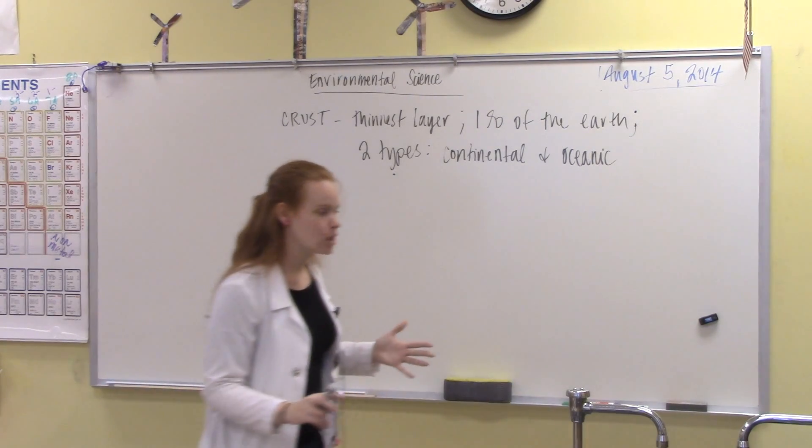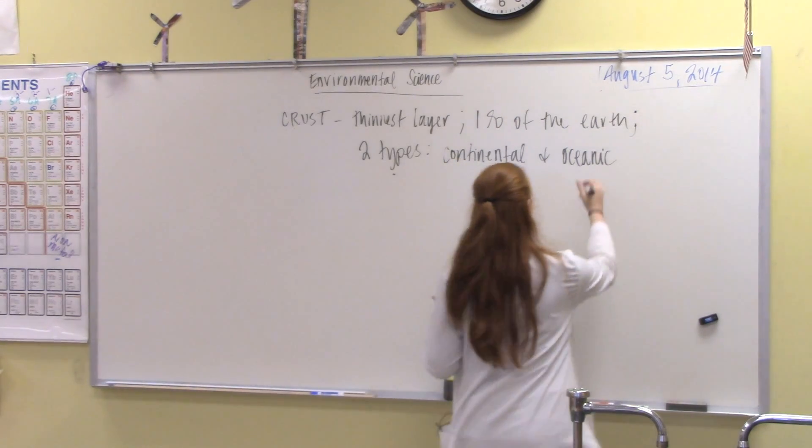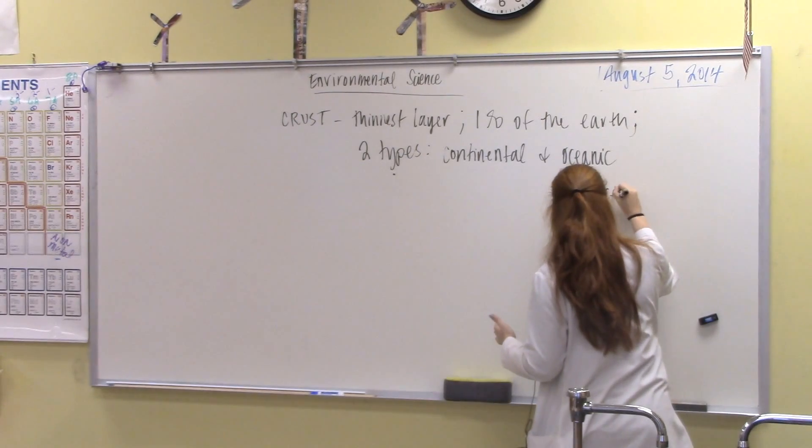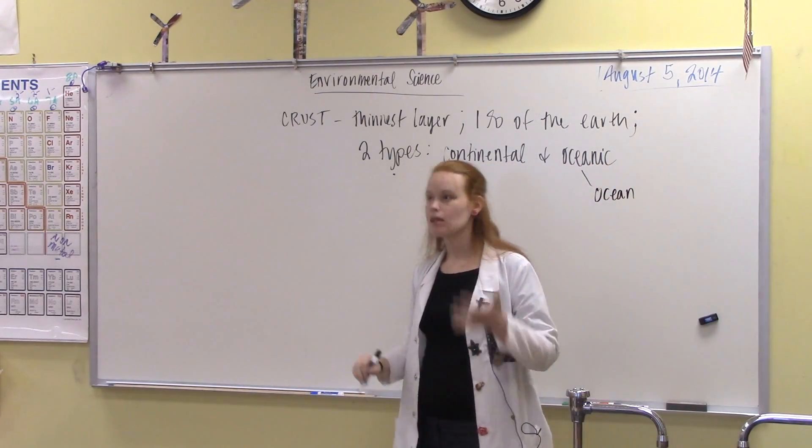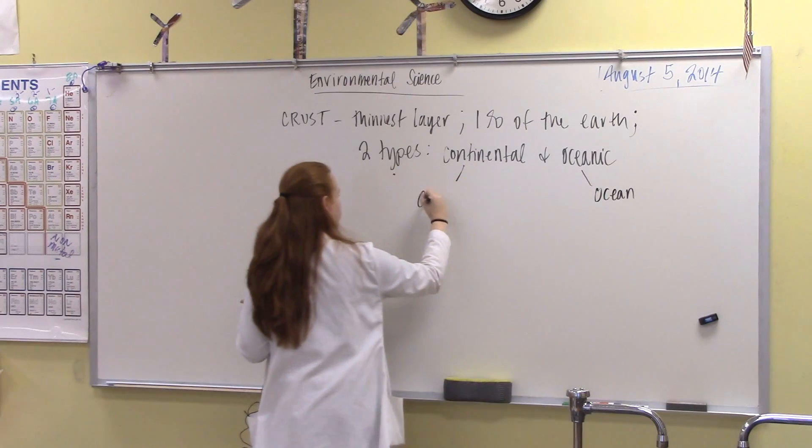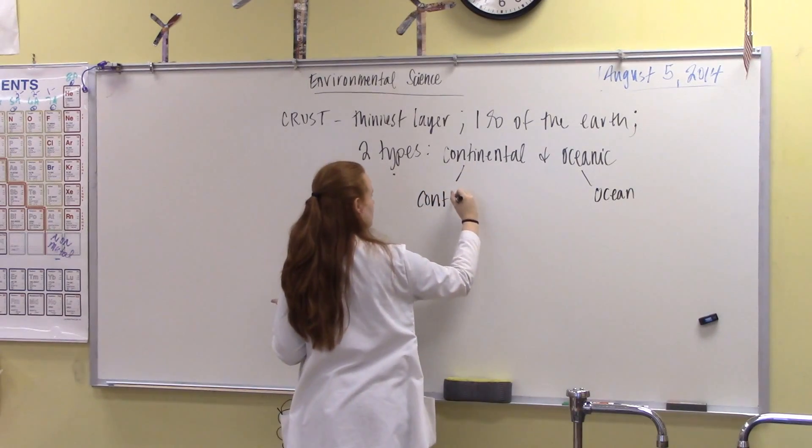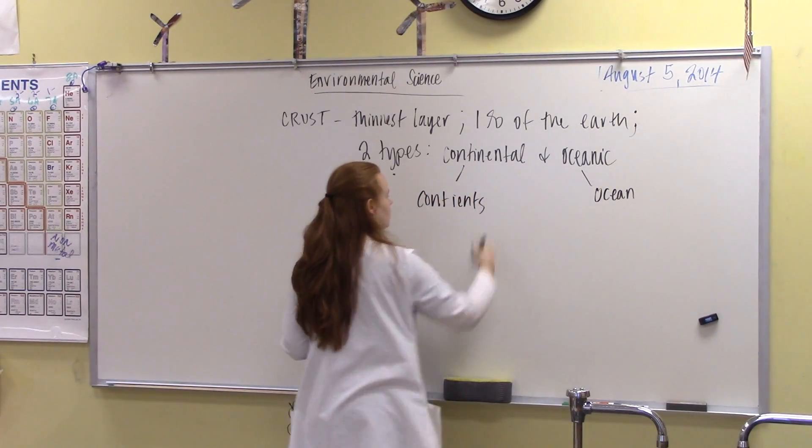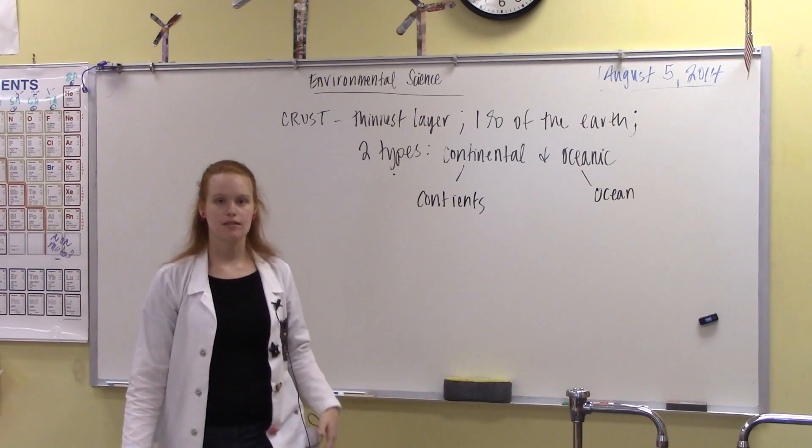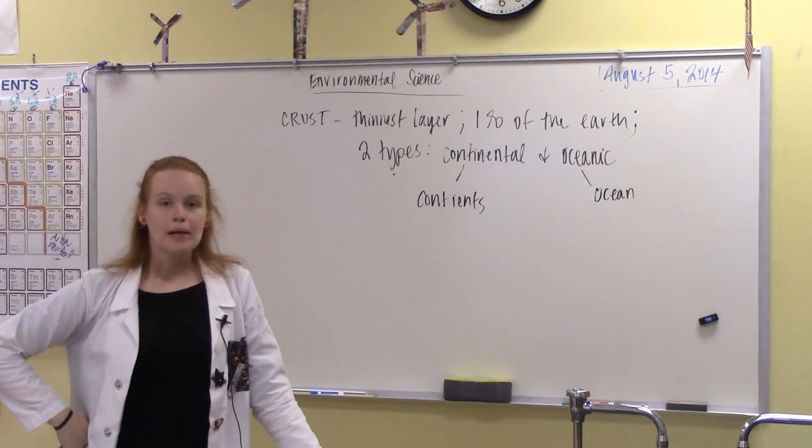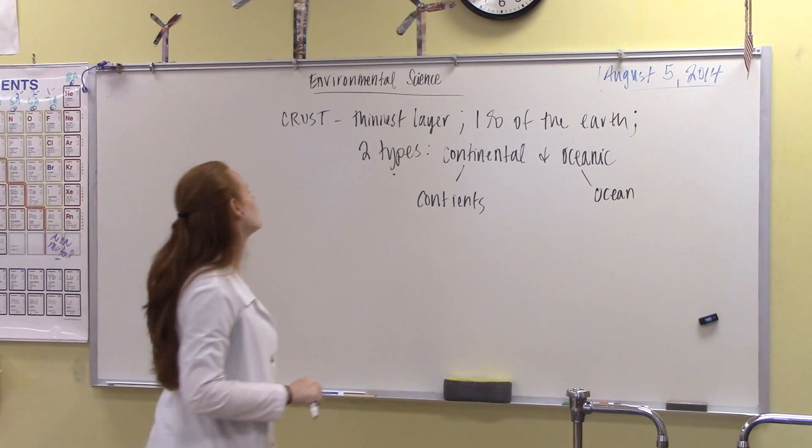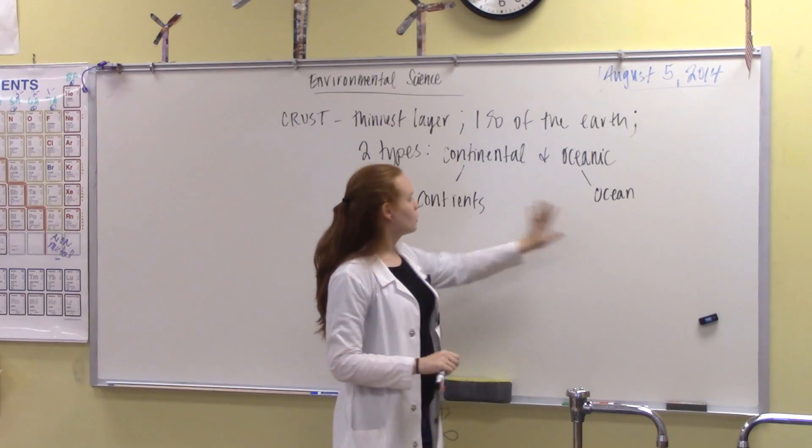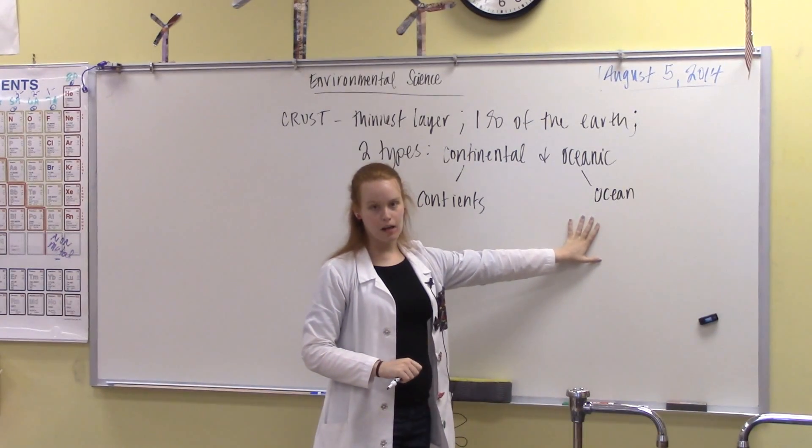So, with that being said, oceanic crust and continental crust should completely give away where they are located. Oceanic crust? Yeah. You are right. It should be located in the ocean. Continental crust? Continent. This is where they should be located.